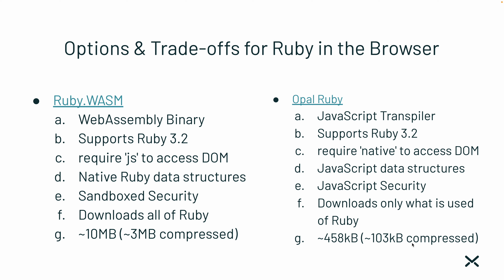So instead of 10 megabytes of Ruby, with Opal it's only about 458 kilobytes uncompressed, about 103 kilobytes compressed — partly because it hooks into existing JavaScript functionality. Those numbers came from someone who experimented with both Ruby Wasm and Opal Ruby. The 10 megabyte figure I confirmed myself in a browser. The benefit of Opal Ruby is it'll only download what's needed, so the website will load much faster. Ruby Wasm might be better for very large applications needing all of Ruby, but for basic web applications, Opal Ruby should work better most of the time, especially for performance characteristics.